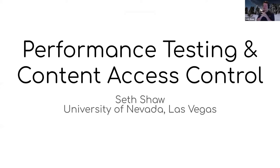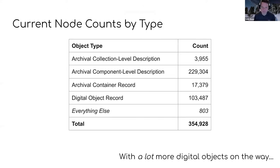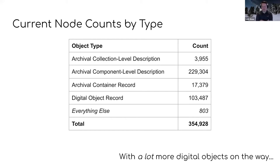Most people who attend the various community calls know that I've been working on this for a little while in terms of performance testing and controlled content access control. I'm going to talk through what happened and what was going on, but first a little bit of background. Our digital repository is replacing ContentDM, and one of our goals with pulling into Islandora is to include not just our digitized content, but also our archival descriptions and moving forward our born digital stuff.